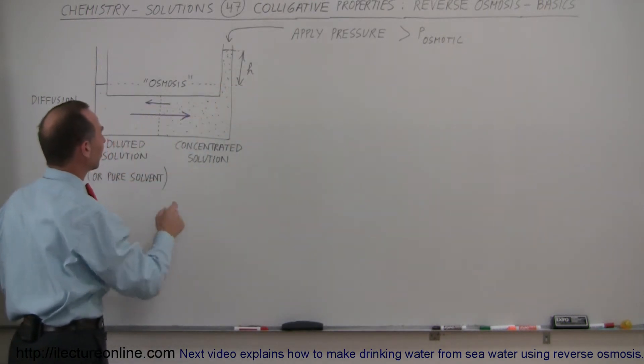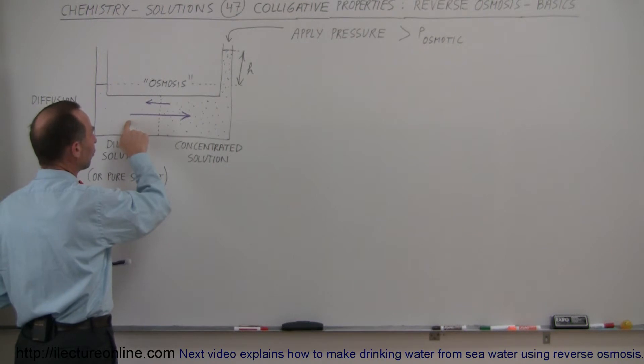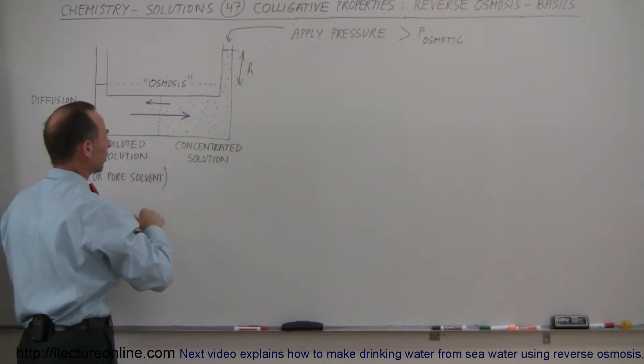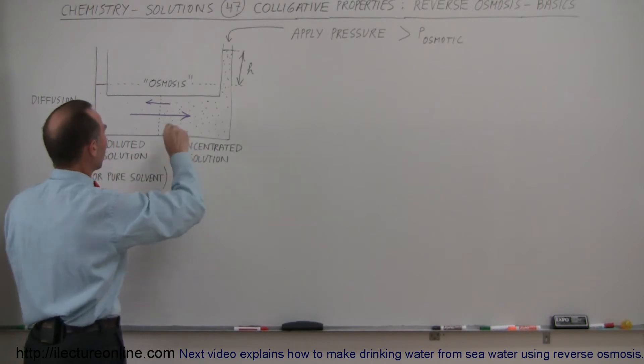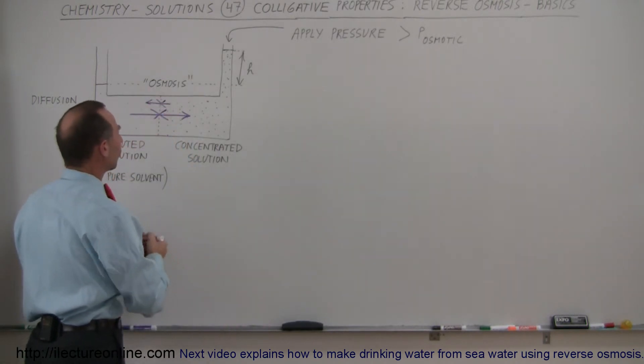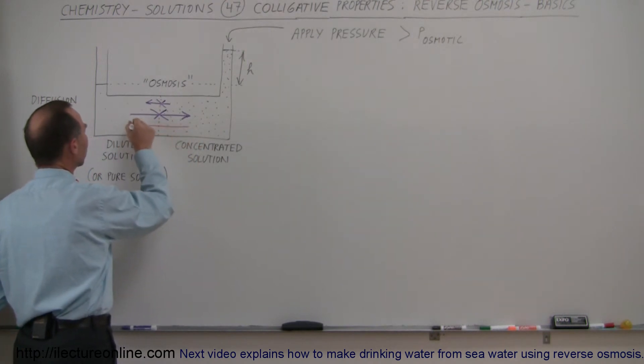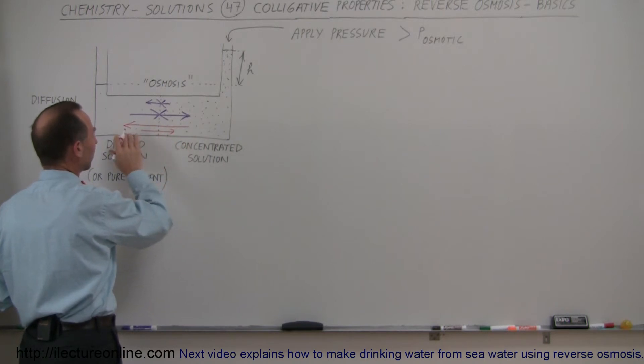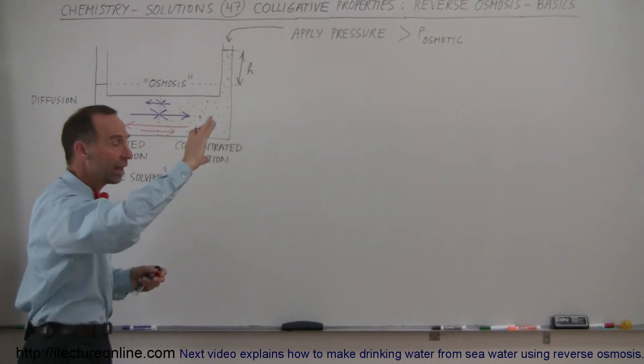So what will happen then is instead of having more of the solvent moving from the less concentrated side to the more concentrated side, you can actually reverse that process and have a situation where more of the solvent molecules will travel from the high concentration to the lower concentration, and less molecules will travel from the lower concentration to the higher concentration.